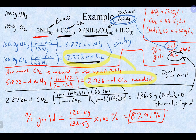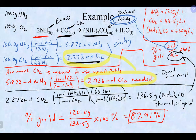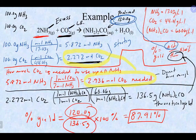Percent yield is just taking the theoretical yield — from either a limiting reagent problem or a regular stoichiometry problem — and dividing the actual yield by it. When calculating percent yield, the units don't have to be grams — you can use moles divided by moles or any units, as long as both the actual and theoretical are in the same units. Any questions on percent yield, limiting reagents, and stoichiometry?